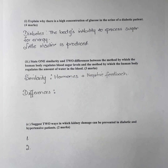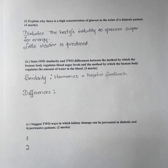Part two: state one similarity and two differences between the method by which the human body regulates blood sugar levels and the method by which it regulates the amount of water in the blood. This question tests your knowledge of homeostasis and a type of homeostasis called osmoregulation. One similarity is that both methods employ negative feedback — a regulation system in which the end product of a process in turn reduces the stimulus of that same process.